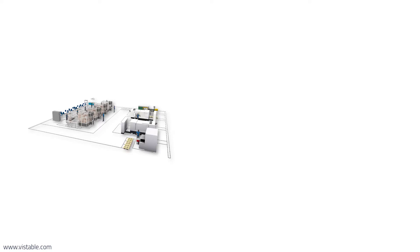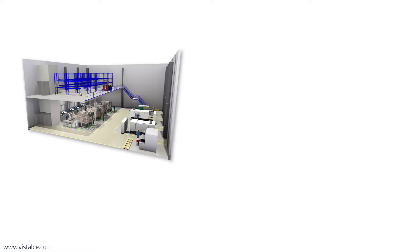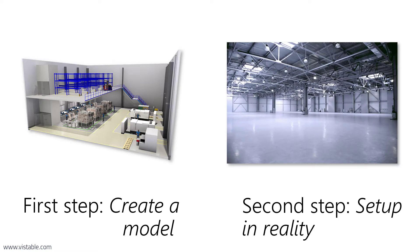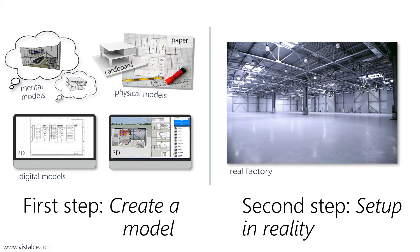The advantages of 3D planning are easy to derive. When something new is created, it is usually built twice: first it is created as a model, then it is built in reality. The models in the first step can be, for example, mental, physical, or digital.